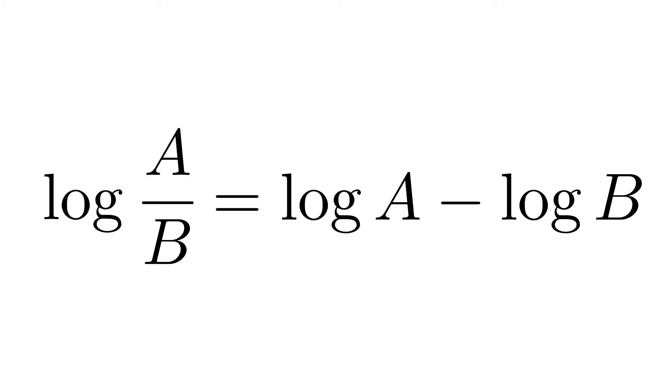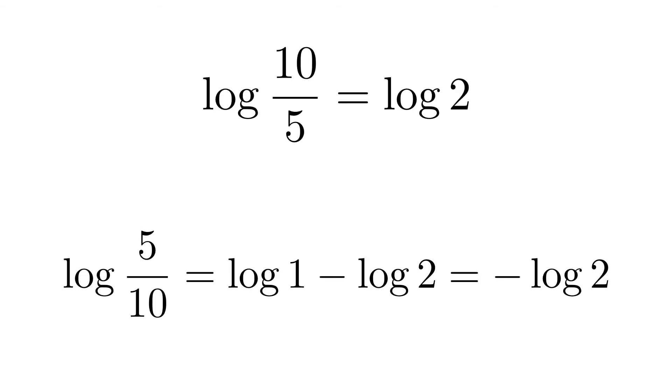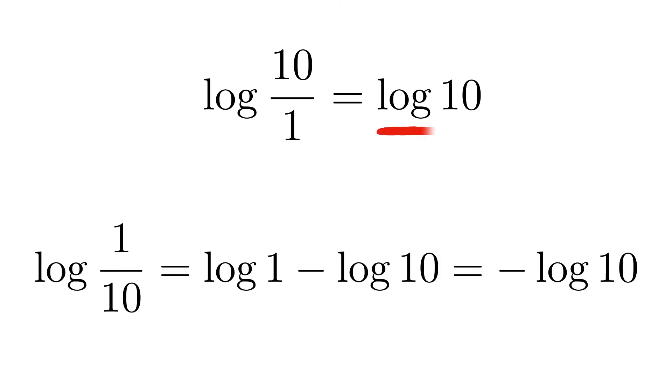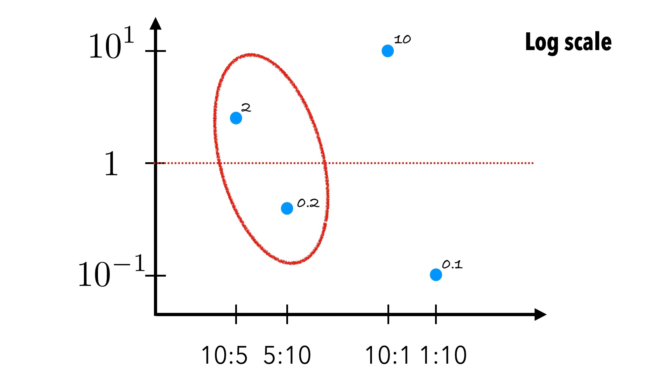You can use log scale. You see, if you take a logarithm of a fraction a over b, it becomes log a minus log b. Now division is converted into a subtraction. And let's check our example. So log of the ratio 10 to 5 is log 2. The log of the ratio 5 to 10 is minus log 2. They're at the same distance from the origin, which is log 1. How about the ratio of 10 to 1? The log of 10 is log 10. The log of 1 over 10 is minus log 10. Again, perfect symmetry. And this is why you should use log scale when you plot ratios.